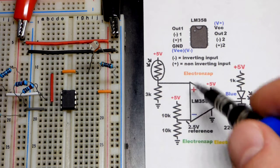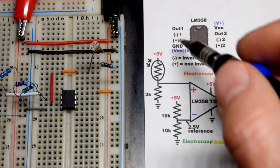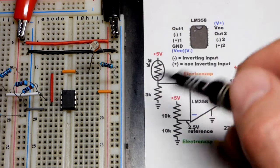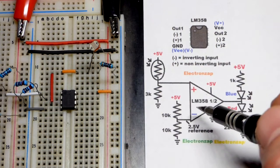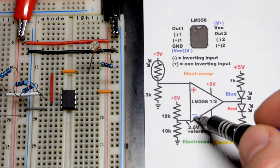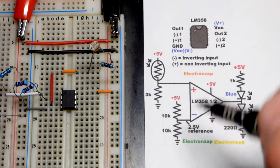So I switched where the inputs are on the schematic versus what they are on the integrated circuit. So be aware of that. Here the inverting input is down lower, there it is up higher.